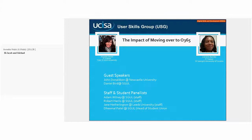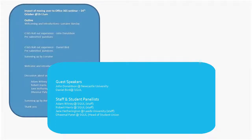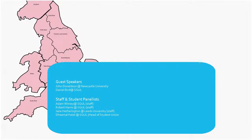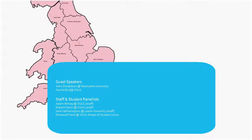Before we start, let me go through some housekeeping. We're going to start with a quick icebreaker — we've got a map of the UK and what I'd like you all to do is take a pen, any colour you like as long as it's not pink, and place a dot where your physical location is on this map so we can gauge where our audience is based. I can see somebody in Yorkshire already.